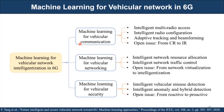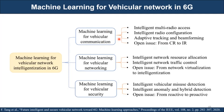If you look at machine learning for vehicular communication, one key application that has to be taken care of when we design the machine learning algorithm is intelligent multi-radio access, because there are too many vehicles running at higher mobility and we have to be very careful in assigning the resources.